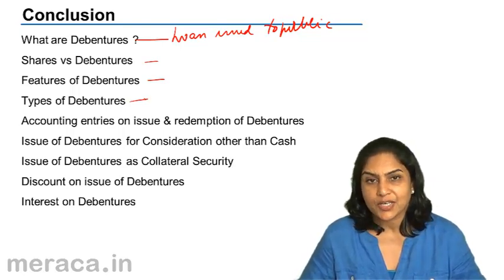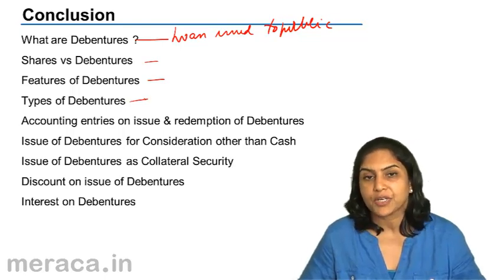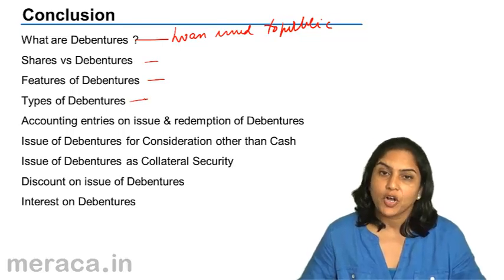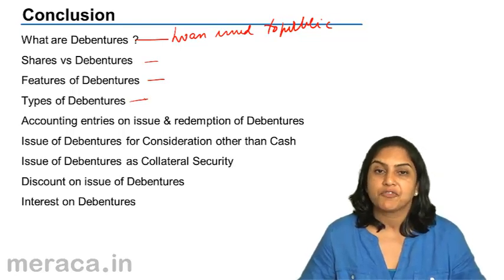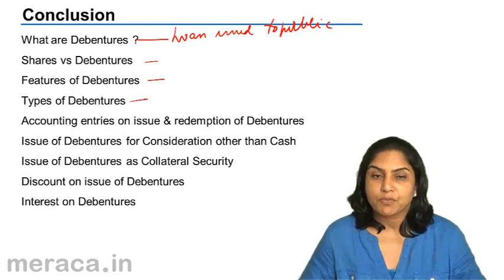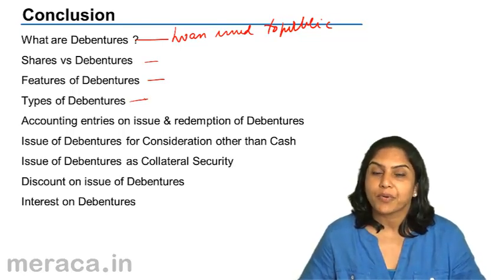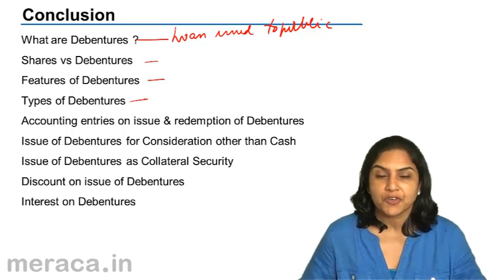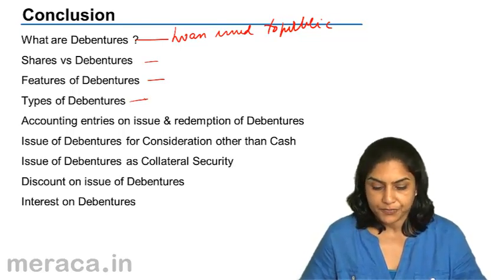Usually debentures are secured, redeemable, and non-convertible. We may also have first mortgage and second mortgage debentures. First mortgage debenture holders get preference of repayment in case of winding up of the company. Second mortgage debentures are paid only after the first mortgage debentures are paid off.